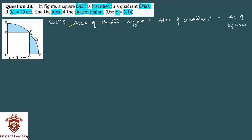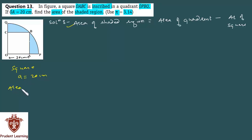पहले square का area find कर लेते हैं, काफी easy है. Square OABC की बात करें तो OA = 20 cm है, और figure को देखें तो OABC के square का एक side 20 cm है. We have side of square as 20 cm. तो area = a² = 20² = 400 cm². Square का area मिल गया: 400 cm².